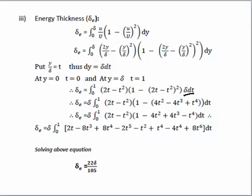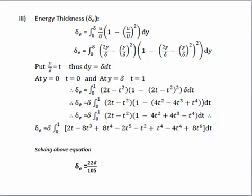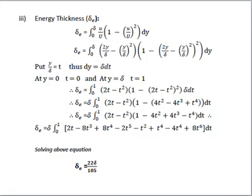Expanding (2t - t²)² gives 4t² - 4t³ + t⁴. Opening with the negative sign and multiplying by the first term (2t - t²), we get: 2t - 8t³ + 8t⁴ - 2t⁵ - t² + 4t⁴ - 4t⁵ + t⁶ and similar terms. Performing the integration from 0 to 1 and simplifying, we finally get the energy thickness as 22δ/105. In this way, we solved two problems covering all three types of boundary layer thicknesses. Thank you.